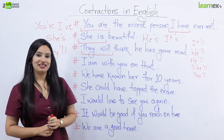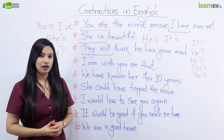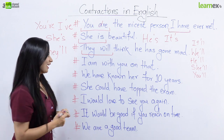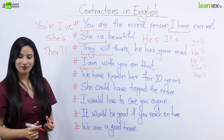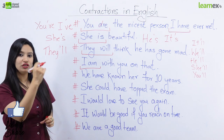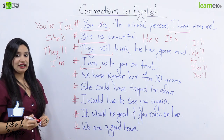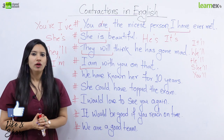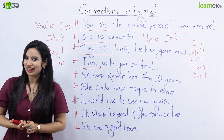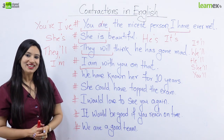Ab iske saath apna agla sentence dekhte hain: 'I am with you on that.' Is sentence ka matlab hota hai, agar aap kisi ke saath agree kar rahe hain, unki baat aap maan rahe hain, toh aap kahenge I am with you on that. Isko aap I am ki jagah yahan par I'm kahenge. Toh bataiye maine yahaan kaun si sound nahi boli? Maine yahaan 'a' ki sound nahi boli, isliye main 'a' ki jagah apostrophe lagaoongi: I'm. I'm with you on that. I am ko aap sirf ek hi subject ke saath use kar sakte hain, isliye hum I am ke saath sirf ek hi contraction bana sakte hain: I'm. Like I'm Michelle.